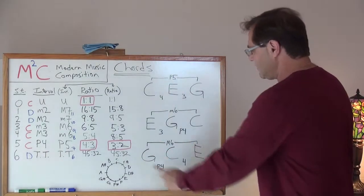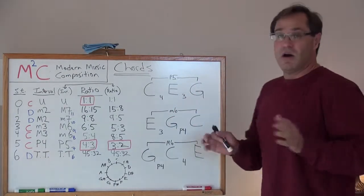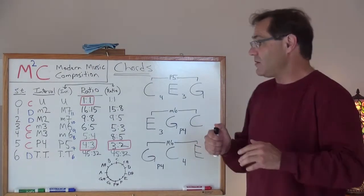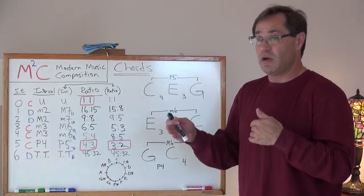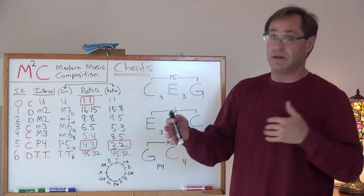And then between G and E, I've got a major sixth, all consonant. All these intervals, whether they're perfect or imperfect, are consonant. So, there you have it. That's how you calculate whether or not a chord has associated with it pure consonants or if there's dissonance in it.